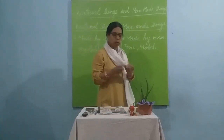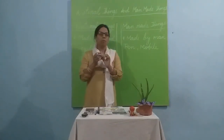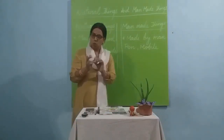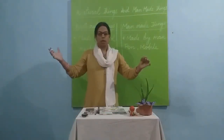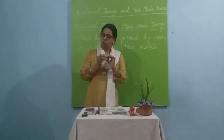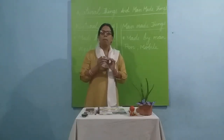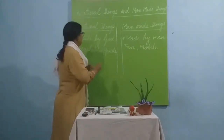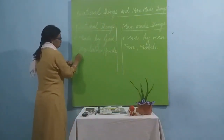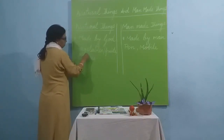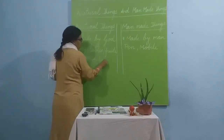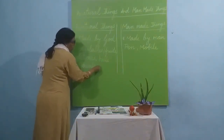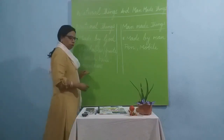Take this stone, for example. This stone is not made by man; it is made by God. Stones, and when a stone is large in size we call it a rock. So stones, rocks, hills, and mountains are all made by God and are called natural things.